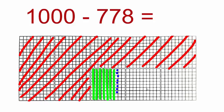Now count the remaining squares. We are left with 222 squares. Is this your answer? How will you show your working?